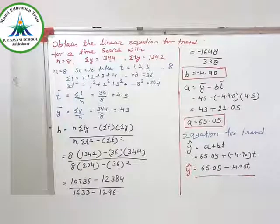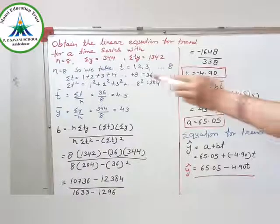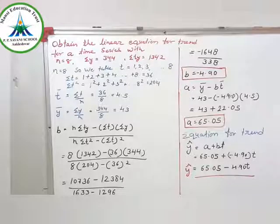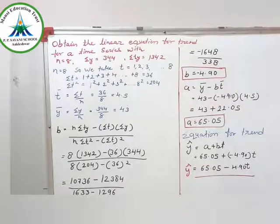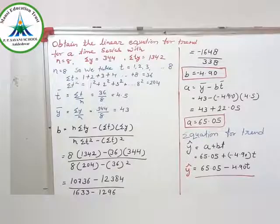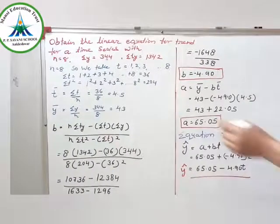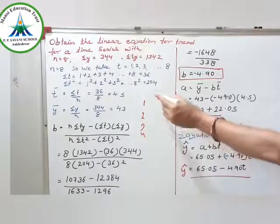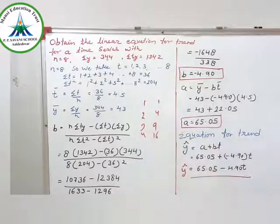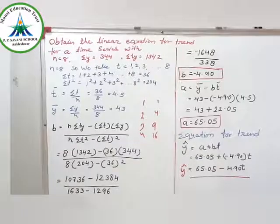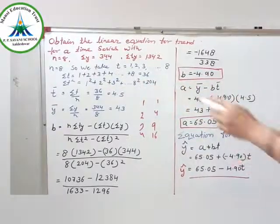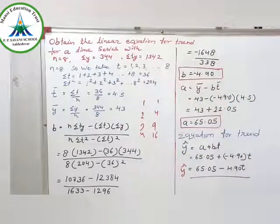Look here, n equal to 8 is given, which means how to find out sigma t. If 8 is given, it means the years start from first to 8. First to 8, if you total them, you get 36, which is your sigma t. And sigma t square is 204.